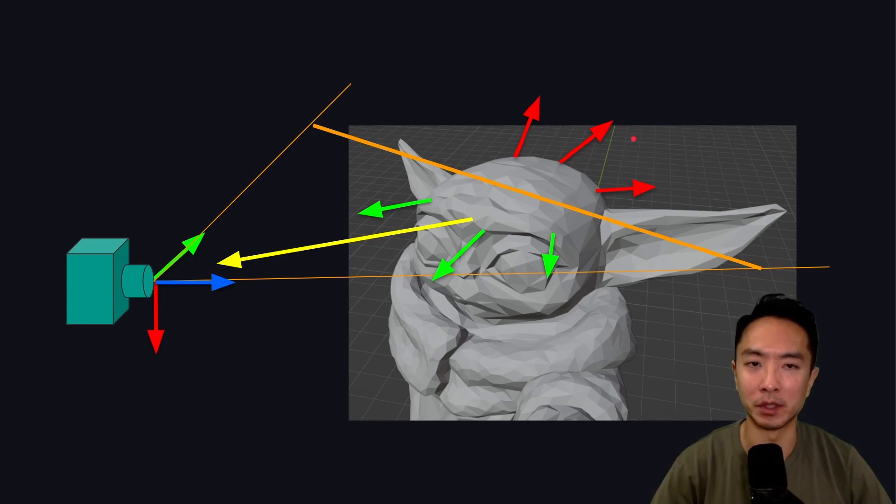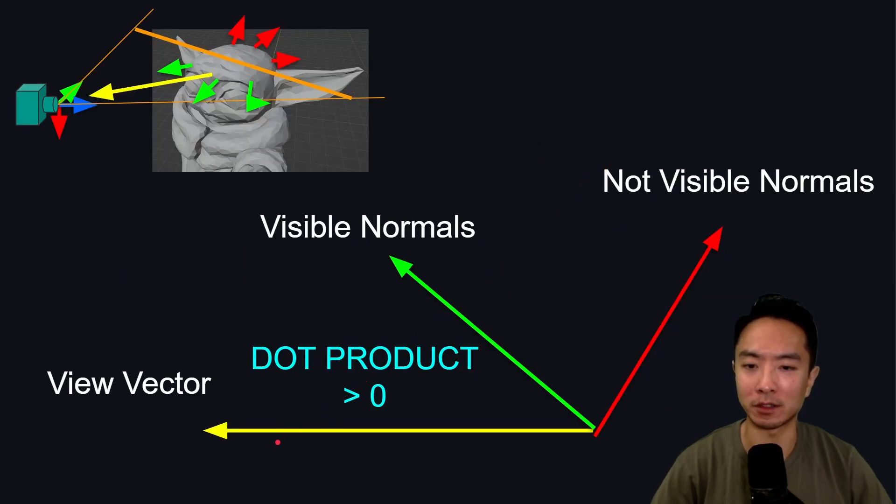The point of this is especially when you have several objects, you may want to optimize your code so you're not rendering millions and millions of faces. The idea is you have the view vector and you have your visible normal vector. So you want to take the dot product. If the dot product is greater than zero, you keep it. If it's not, we throw it away. Those are not visible normals.